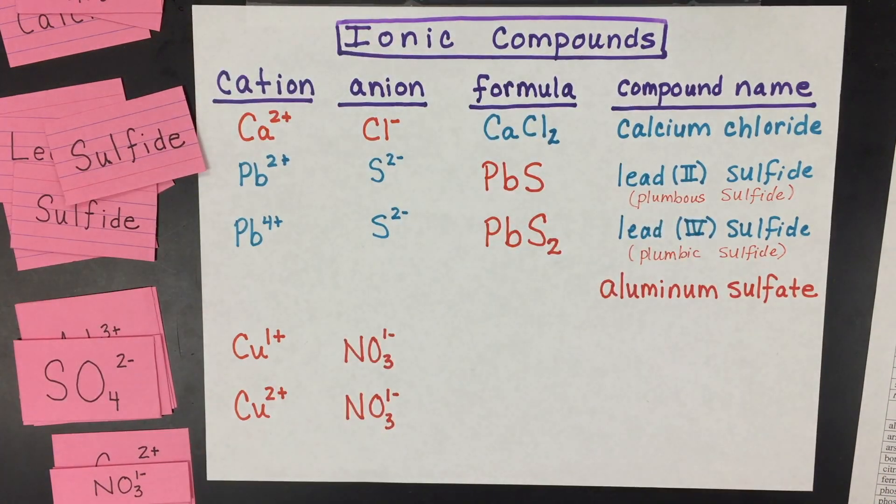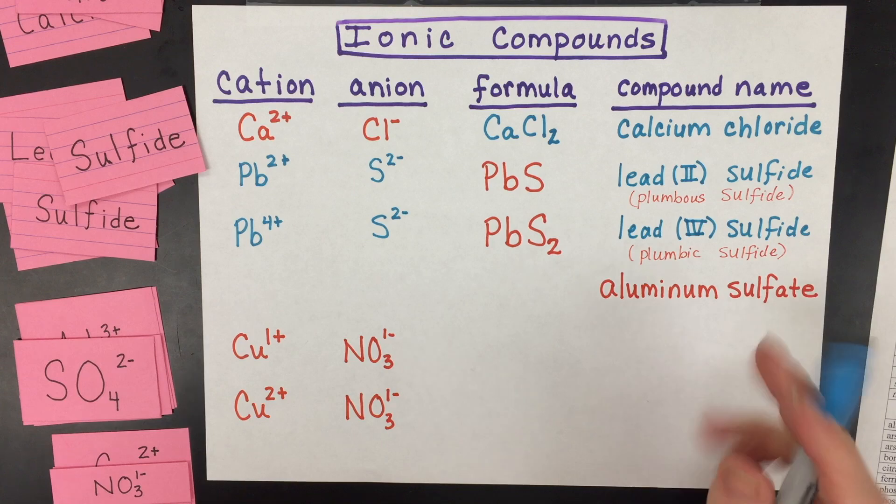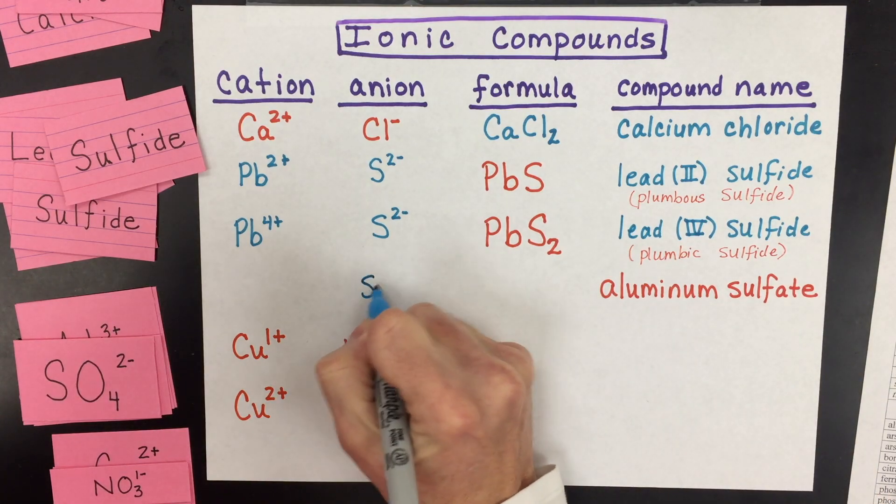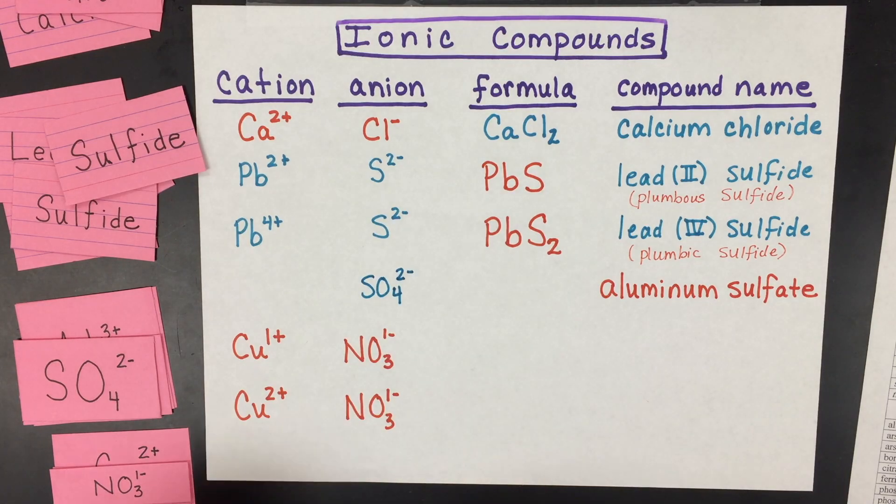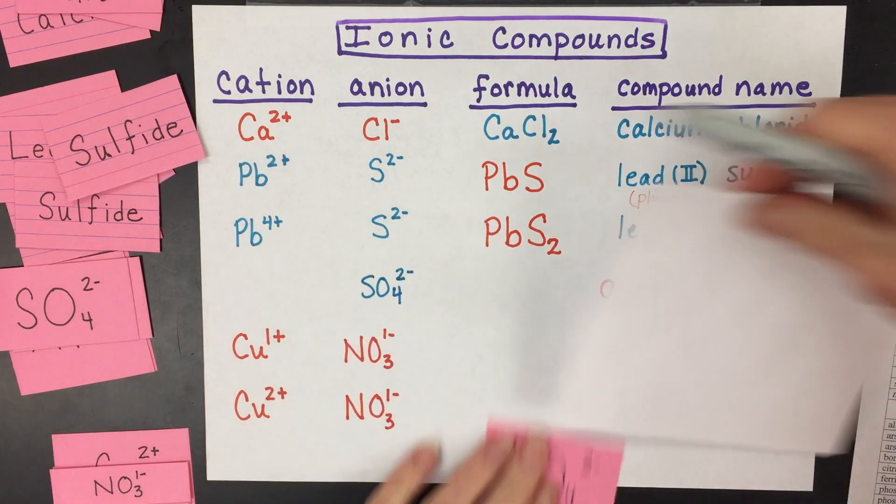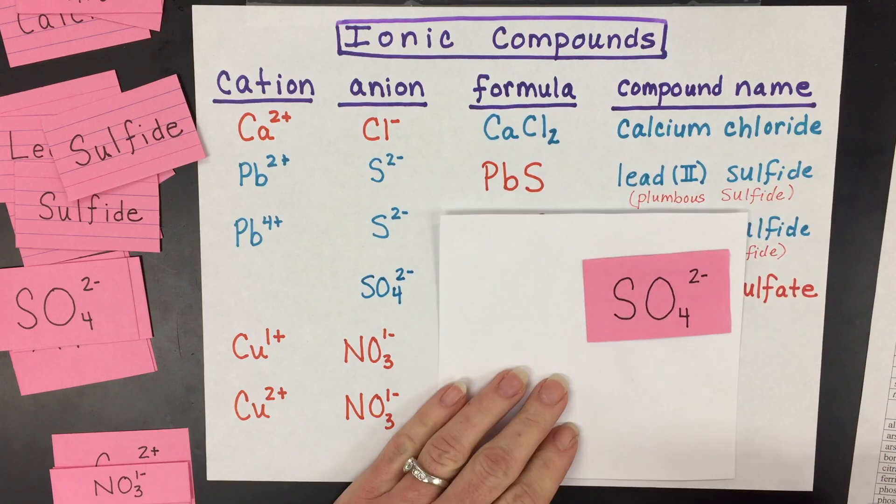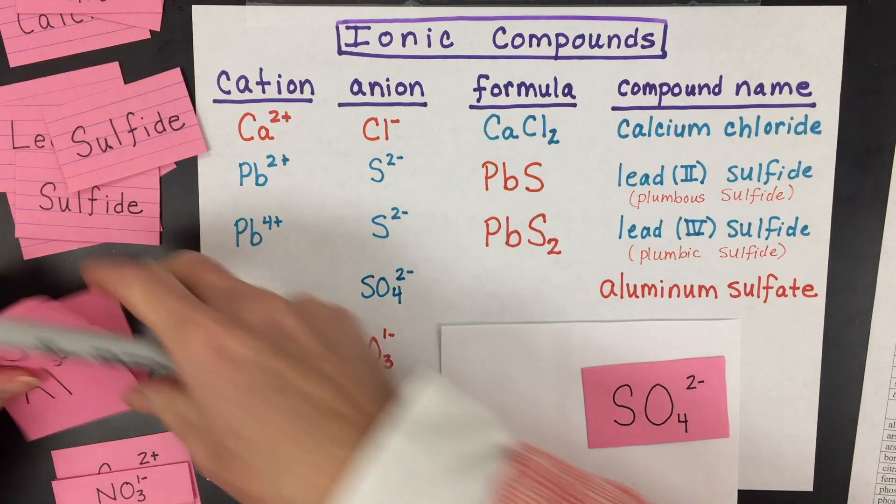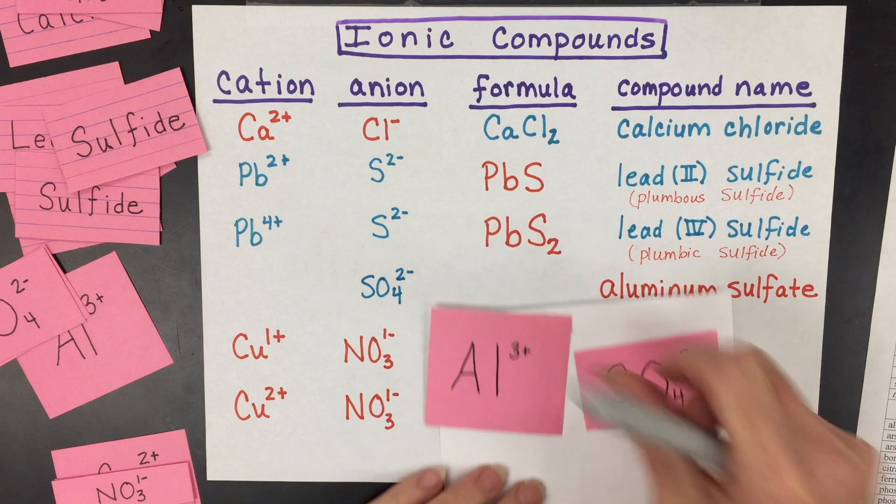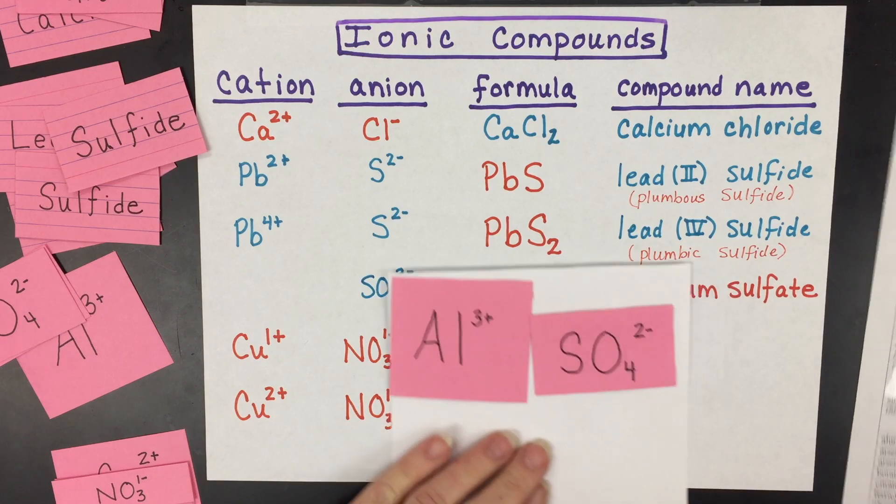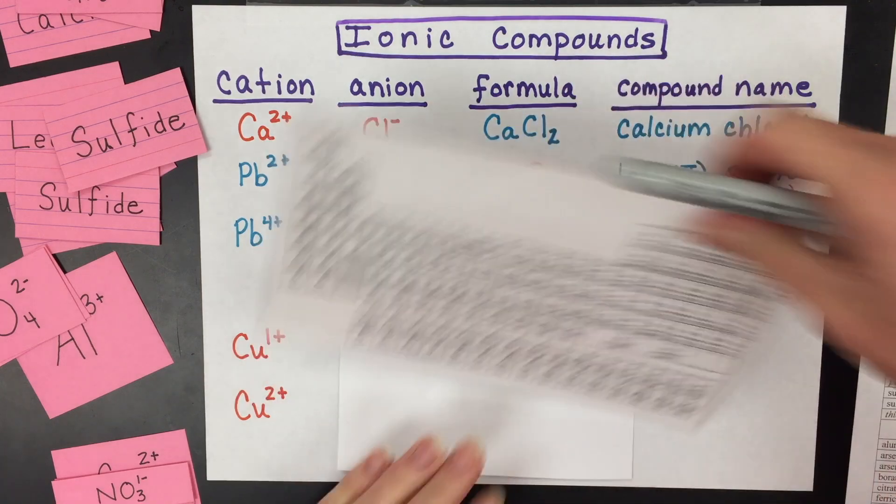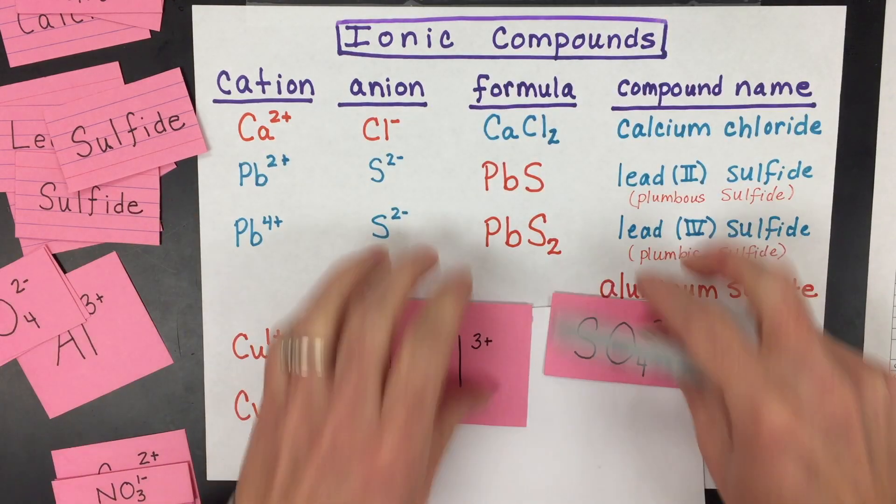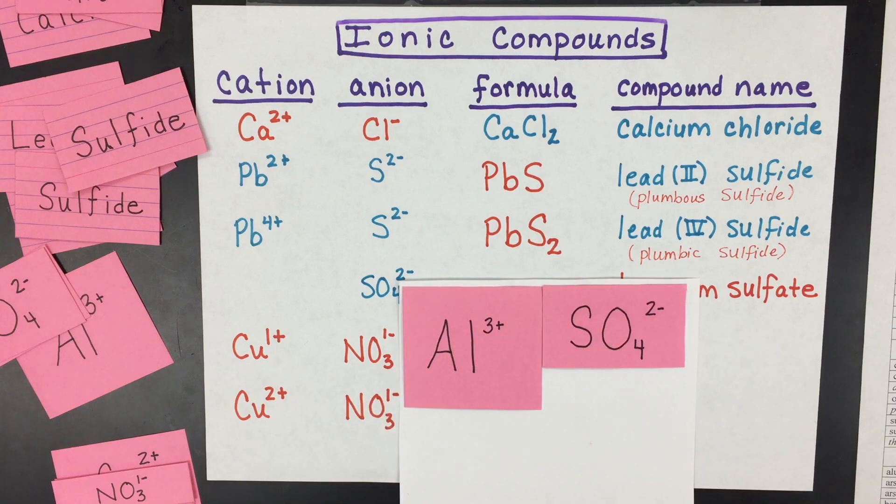Moving on to the next example, we have a new issue. The new issue is that we're using a polyatomic ion sulfate. You'll have to either memorize or look up is SO4 2 minus. And then aluminum is a set charge and it's always a three plus. It's periodic placement is going to show that it's going to lose three electrons.